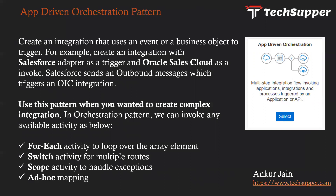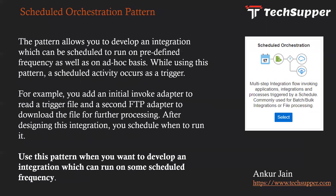When you create a very complex integration in which there might be multiple sources to get data, you can massage the data, use for-each looping, and after aggregating the data, send it to the target application. In the orchestration pattern we can invoke activities such as: For Each to loop over array elements, Switch for multiple routes, Scope to handle exceptions, and an ad hoc mapper to add an extra mapper as needed. There are many more activities available in this pattern.